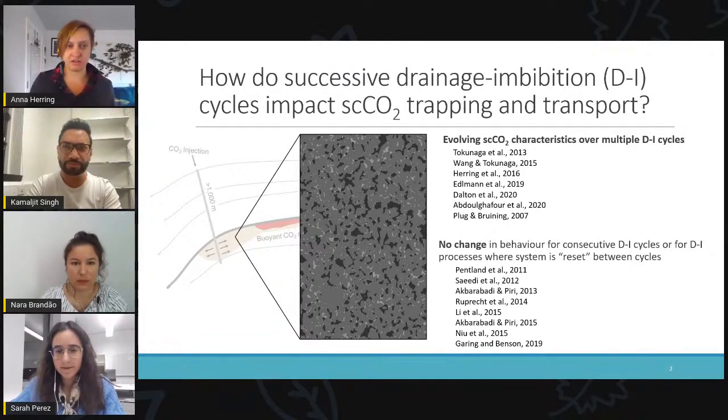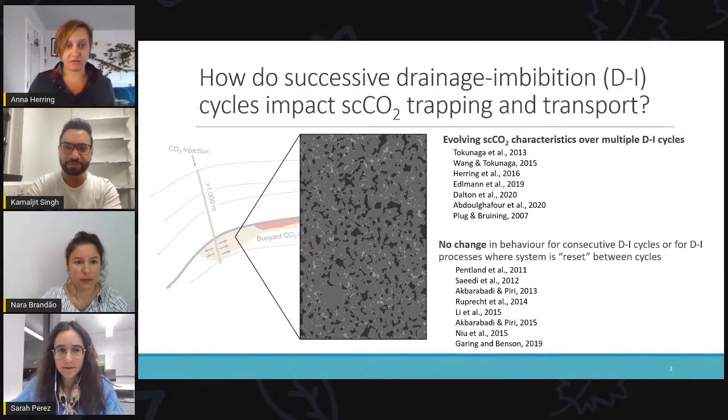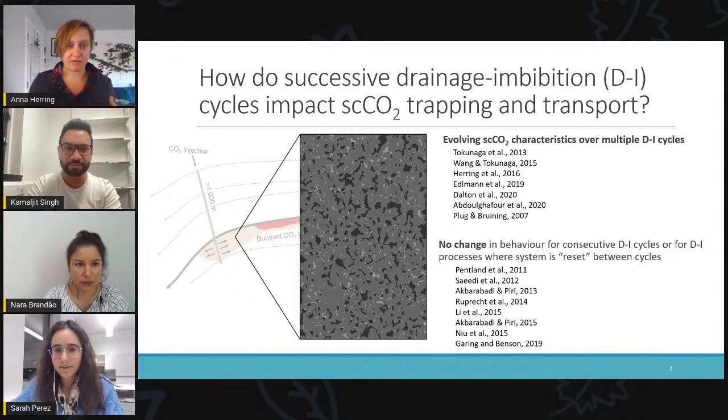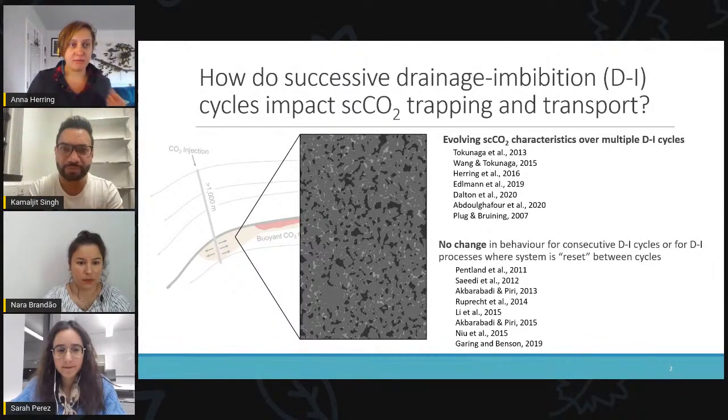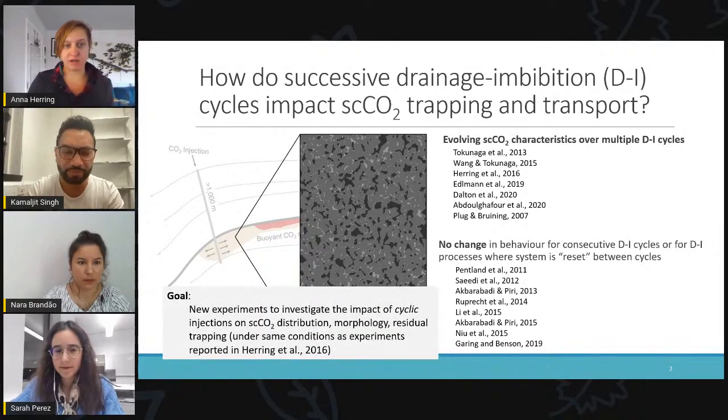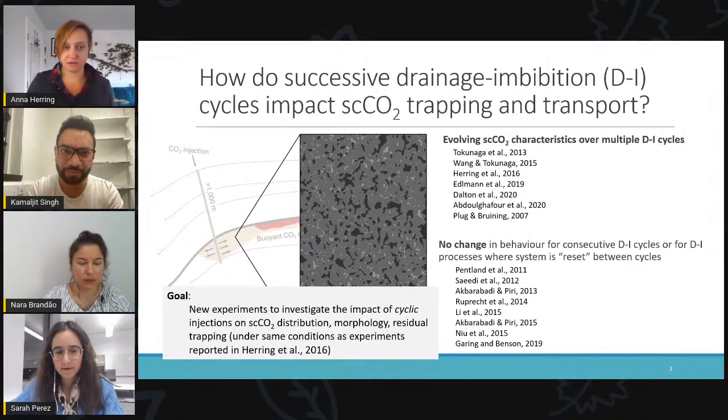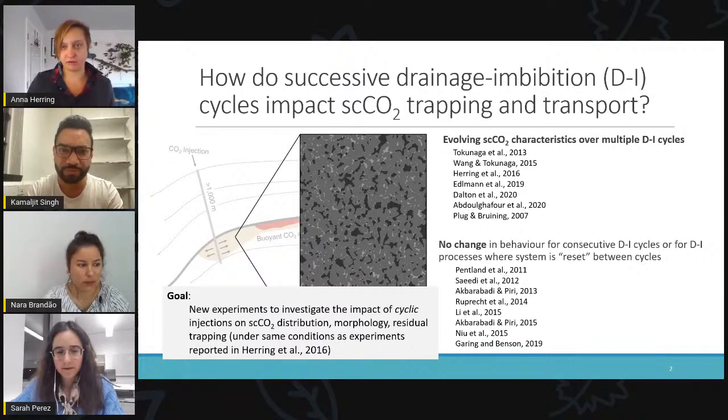And so that's what we're focused on in this study. And in looking through the literature, there are some contradictory observations on this topic. Basically, some researchers have observed that the CO2 brine porous media system appears to change if you go through multiple drainage and imbibition cycles, while others have observed exactly the opposite. So in this study, we wanted to conduct a new set of experiments and try to pin down more precisely what happens when we have multiple drainage and imbibition cycles and how that might impact capillary or residual trapping of supercritical CO2.